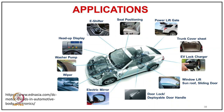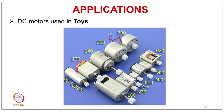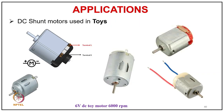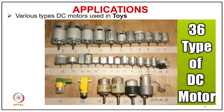In electric vehicles, many small permanent brush DC motors are used for AV lock chargers, trunk covers, seats, power lift gates, heat propulsion, e-shifters, heads-up displays, washer pumps, wiper pumps, electric mirrors, door locks, window lifts, sunroofs, and slider doors. DC motors are widely used in toys — the toy industry is very large, using permanent brush DC motors at low voltage. A typical 6-volt toy motor runs at 6000 RPM with a gear to achieve high torque.